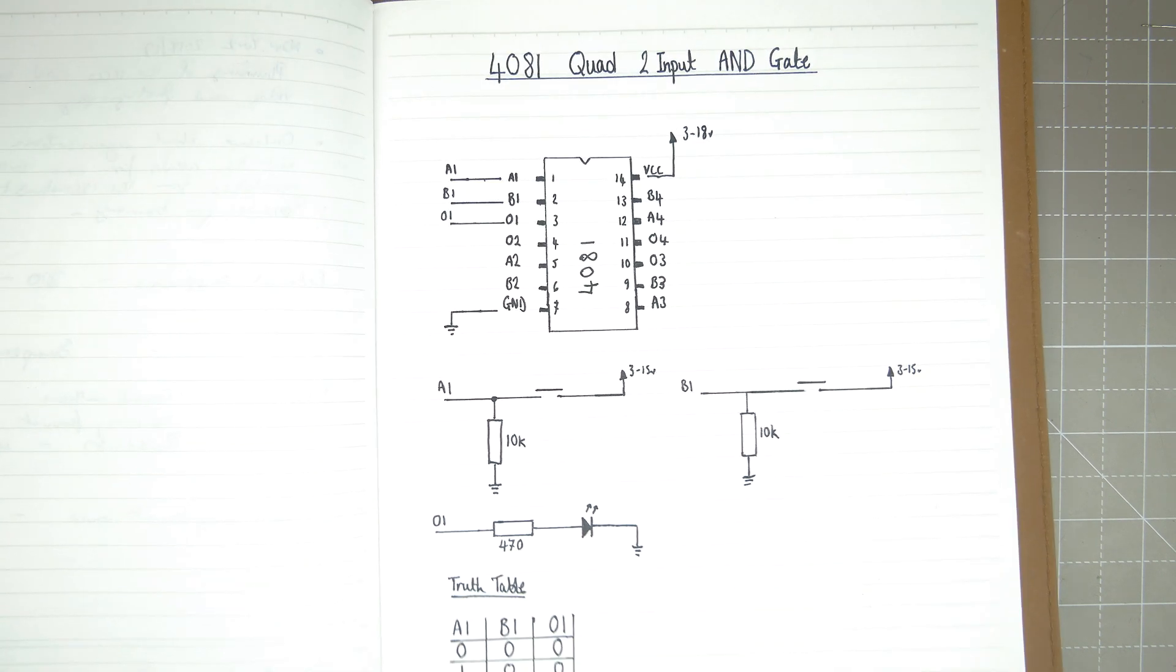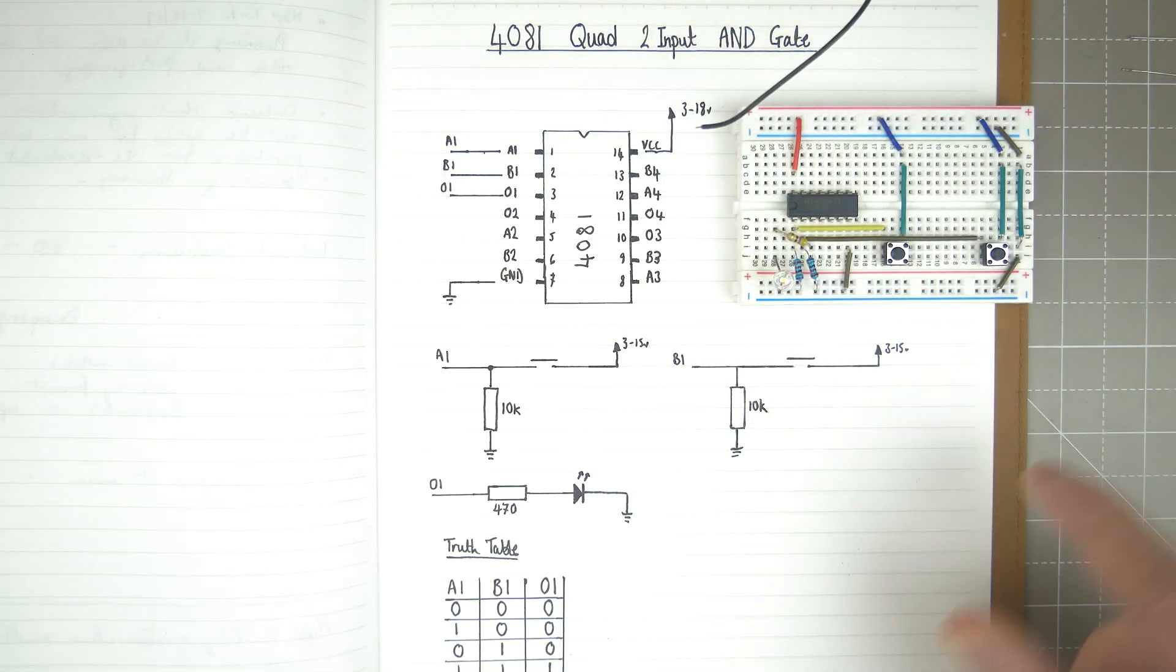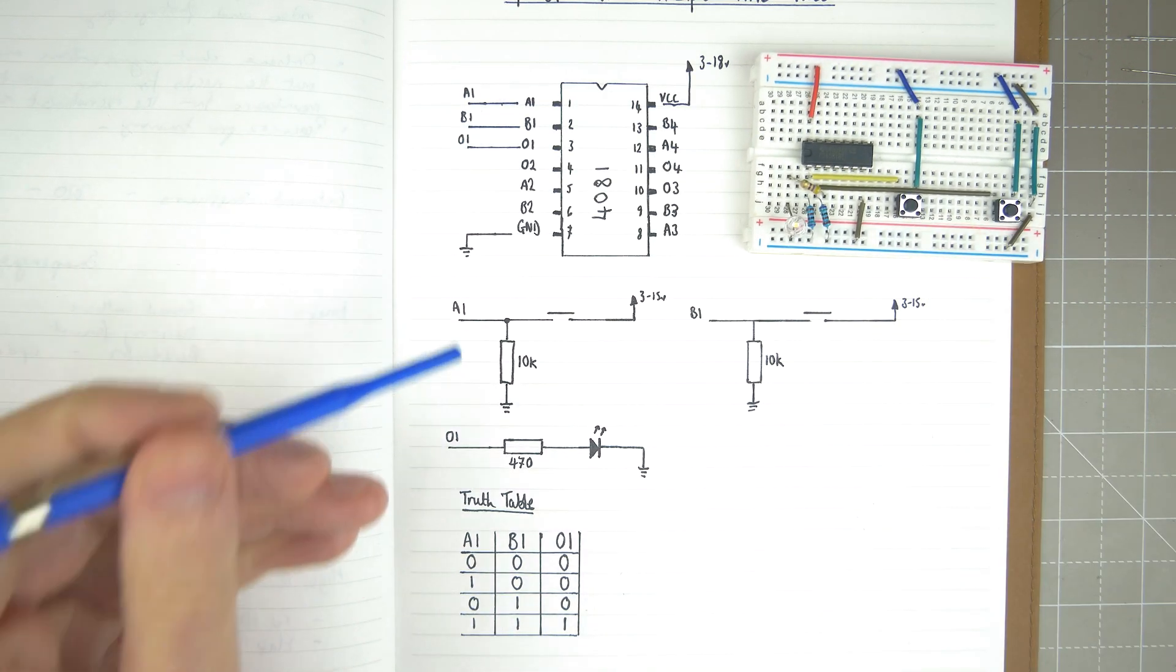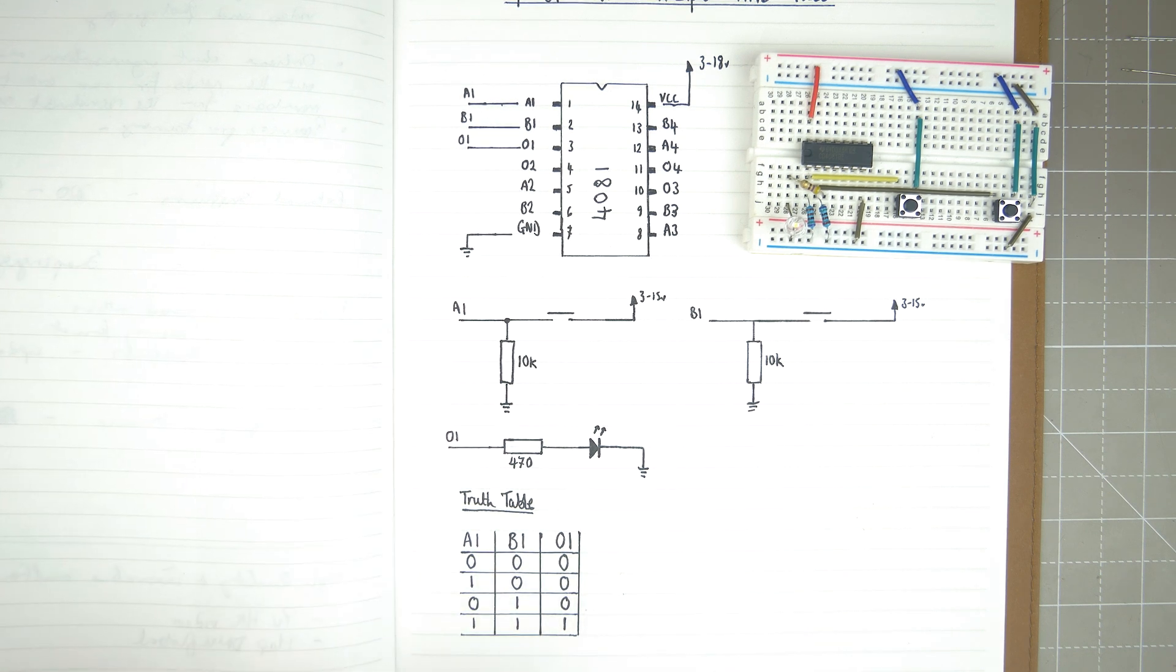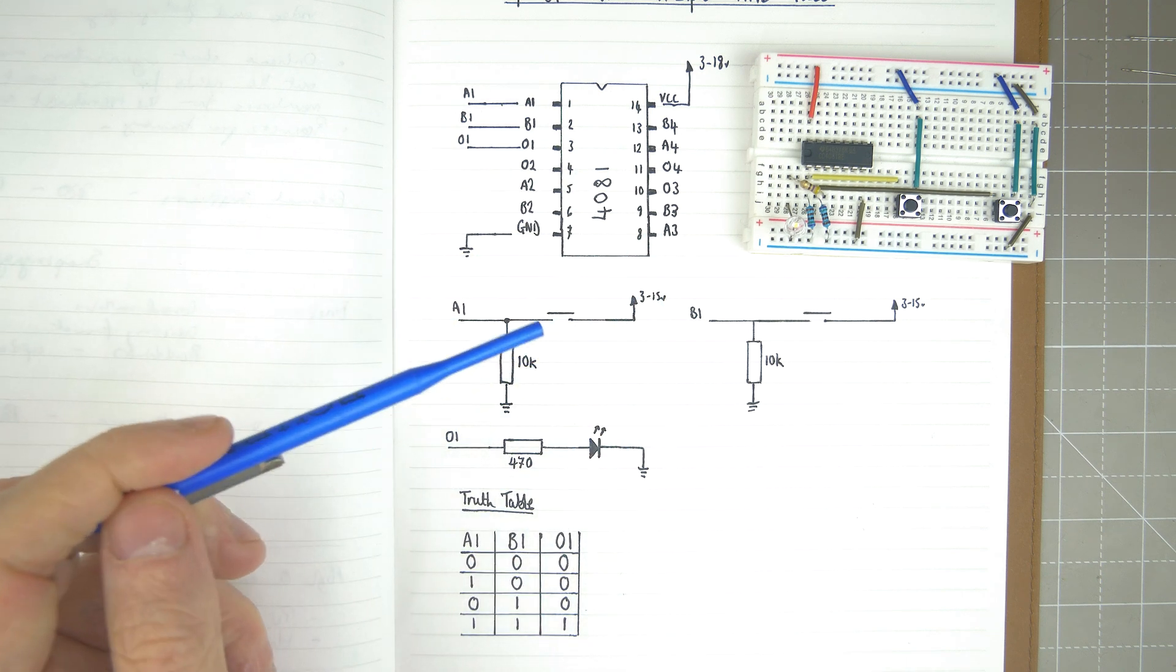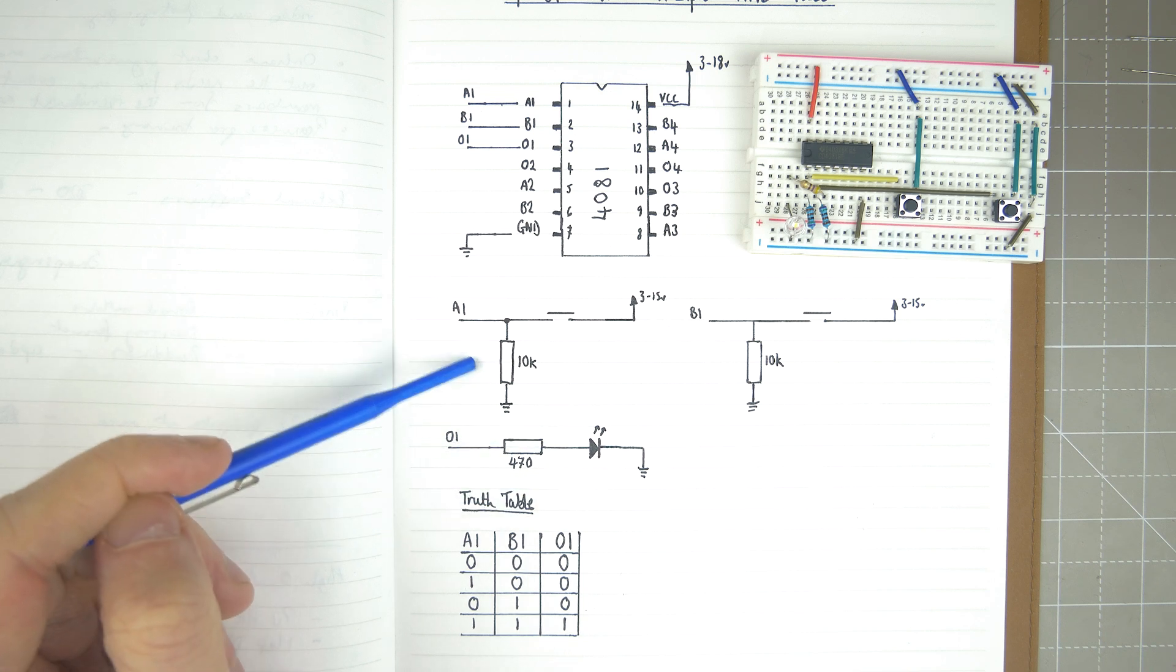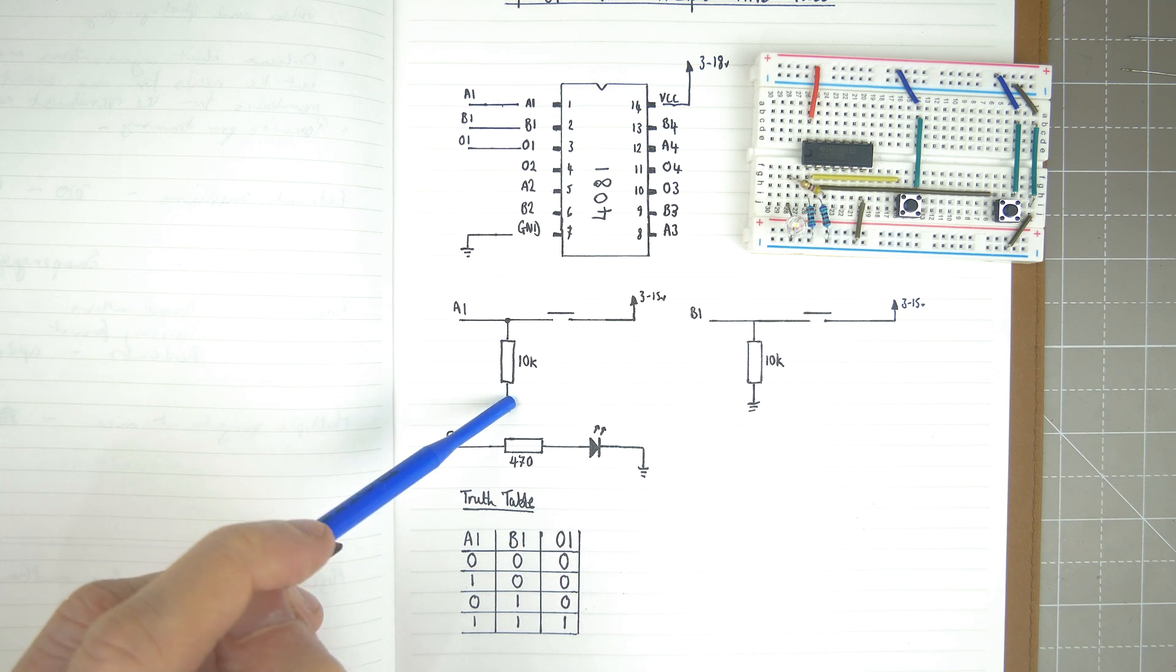The way I've hooked up the buttons is that they go to VCC. Down here, we've got input A with a 10K resistor to ground. It's important with CMOS devices that you don't leave input pins floating—that is, not tied to VCC or tied to ground. In this case, I want to pull it to ground, so I'm just using a 10K resistor.